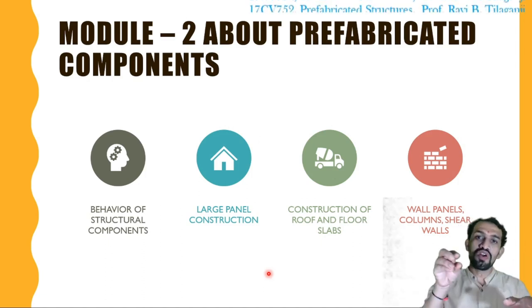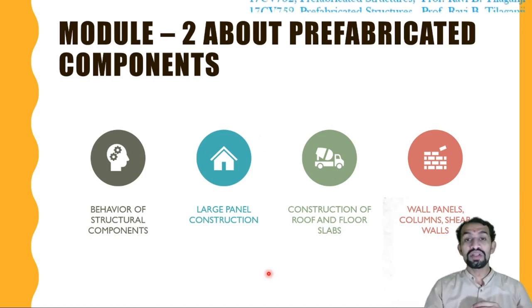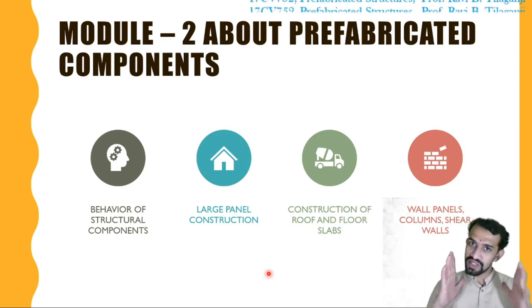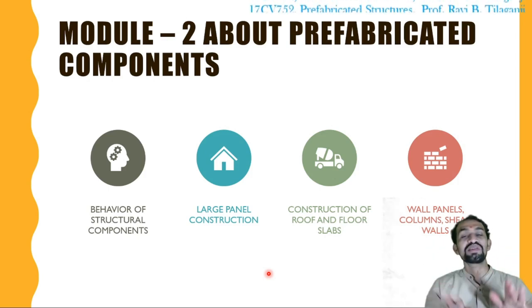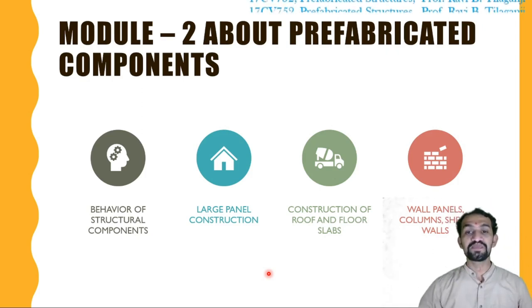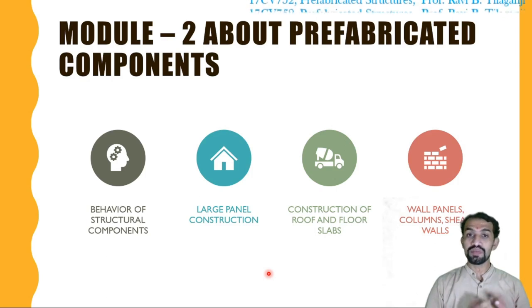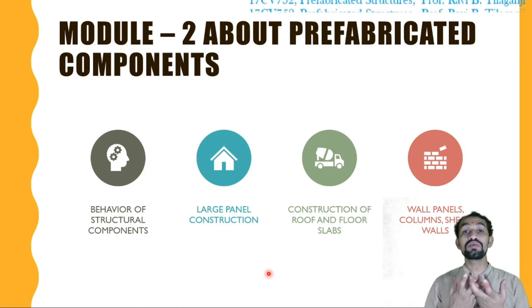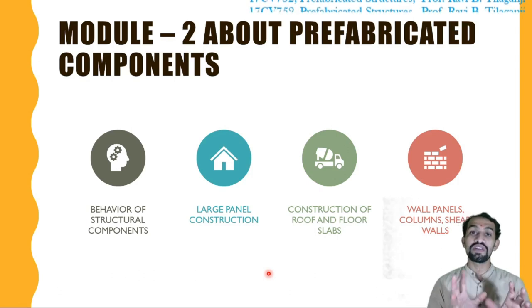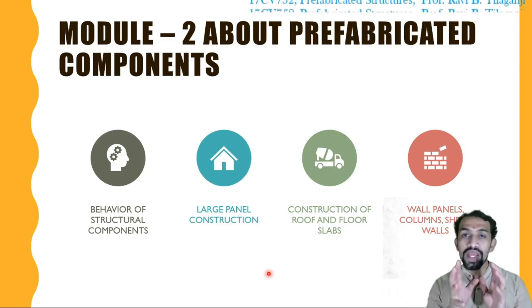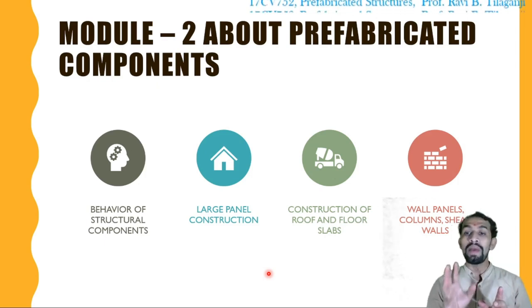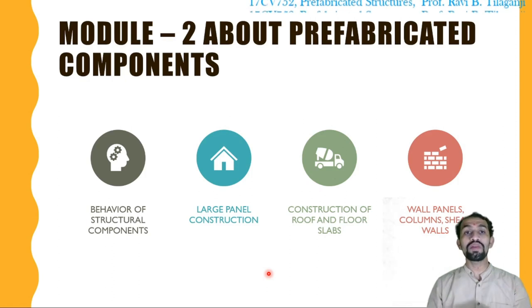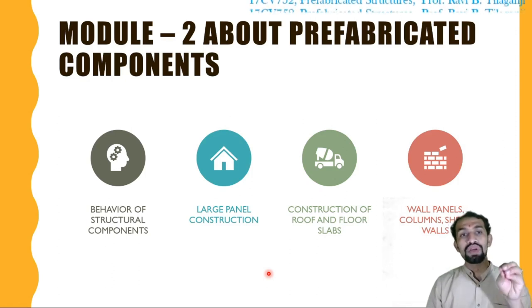This prefabricated components is what we are going to learn. Behavior of structural components. How the structural components are going to behave. Large panel construction. Whether is it possible? Imagine the thing. Whether it is possible to get the large panel construction. Construction of roof and floor slabs. Possibilities or not possibilities. Prefabricated is the new thing for us. New thing we have to go into deep and understand whether it is more useful in our future life. Whether we can make this with the future wall, panel, column, shear walls, everything are prepared. Now everything will be prefabricated. But how material is what? That will be all going to tell.